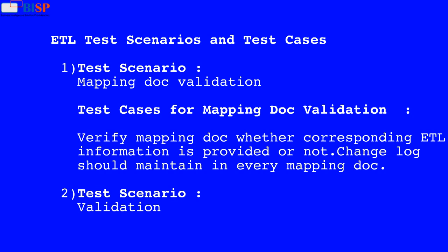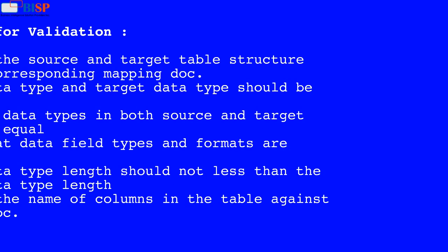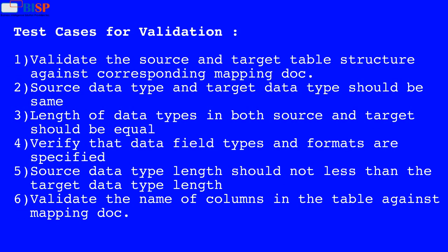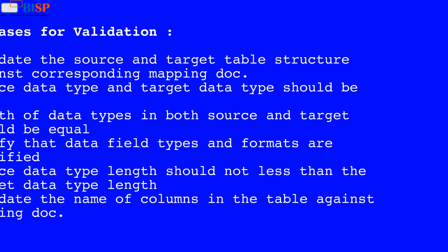Test Scenario 2: For validation. Test cases for validation: 1. Validate the source and target table structure against the corresponding mapping document. 2. Source data type and target data type should be the same. 3. Length of data types in both source and target should be equal. 4. Verify that data field types and formats are specified. 5. Source data type length should not be less than the target data type length. 6. Validate the names of columns in the table against the mapping document.